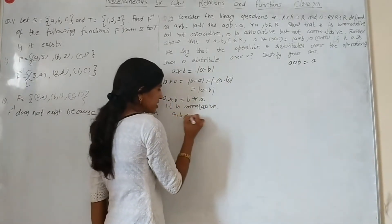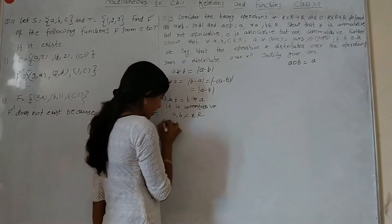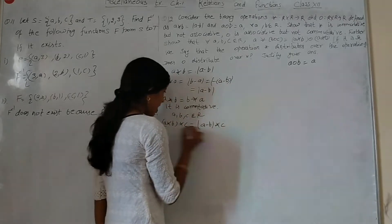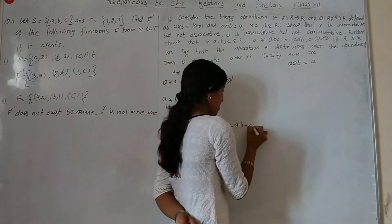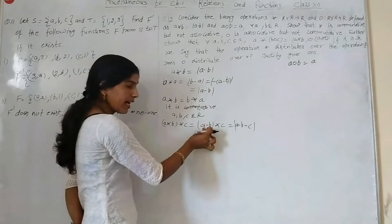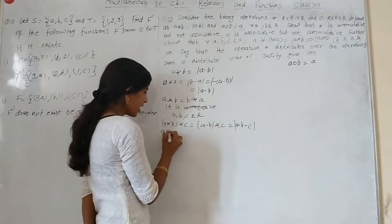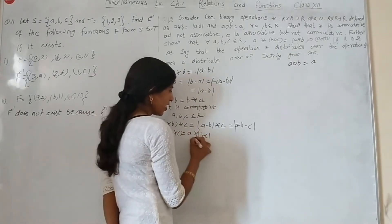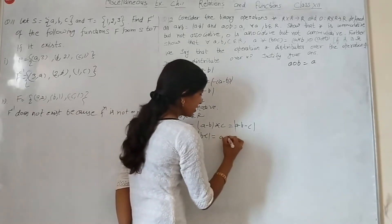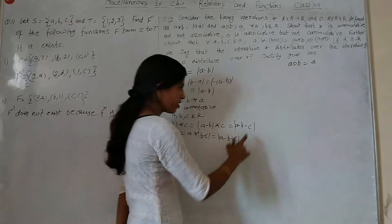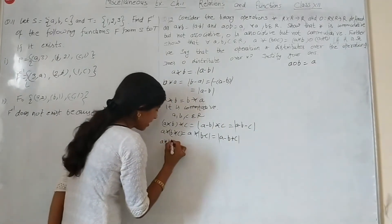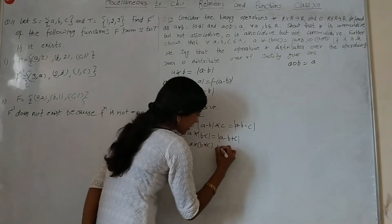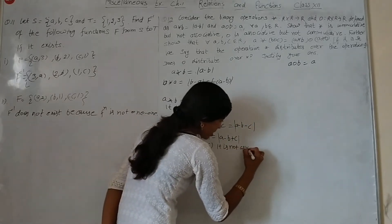For associativity, we check A star (B star C). What is A minus B, star C? That gives A minus B minus C. And (A star B) star C gives A star (B minus C), which equals A minus (B minus C). Since A minus B minus C is not equal to A minus (B minus C), the operation star is not associative.